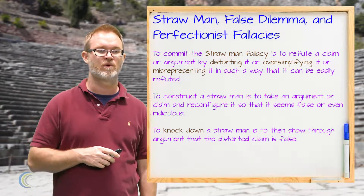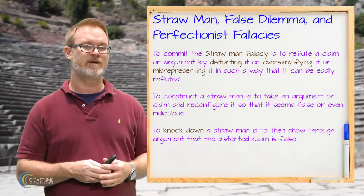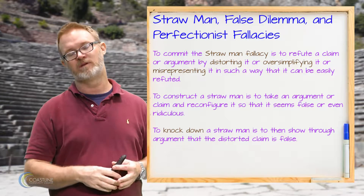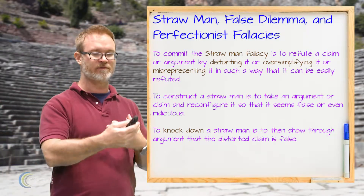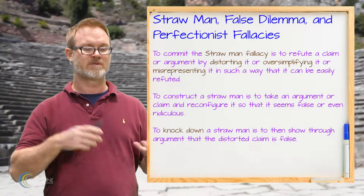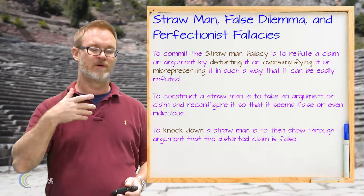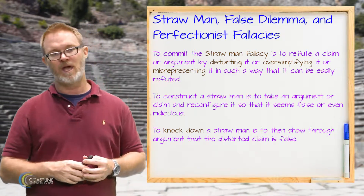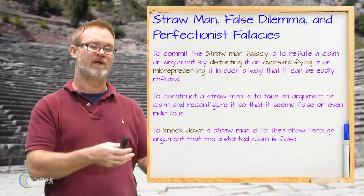The next set of fallacies includes straw man, false dilemma, and perfectionist fallacy. Straw man is a type of argument meant to distort or misrepresent an opponent's position. The idea is that if you're debating someone and they give an argument or take a position, and your response is to twist and misrepresent it in such a way that it looks absurd — that's creating the straw man. The straw man is the weak representation of the argument, and then knocking it down means disputing that weak representation.